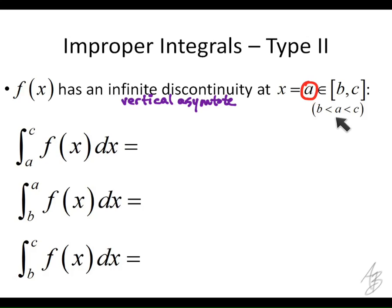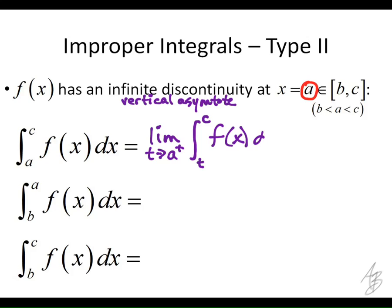For the first case, the discontinuity is at x equals a, which is the left endpoint of the interval from a to c. Since a is smaller than c, we approach a from the right — taking the limit as t approaches a from the right of the integral from t to c. For the second case, we're going from b to a, so we approach a from the left: the limit as t approaches a from the left of the integral from b to t.